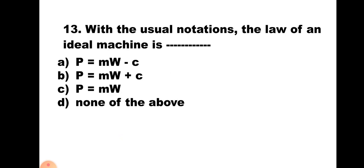Question number 13: With the usual notation, the law of an ideal machine is — A) P = MW − C, B) P = MW + C, C) P = MW, D) none of the above. For an ideal machine, friction is zero, therefore C = 0 and the law becomes P = MW. Hence the correct answer is C) P = MW.